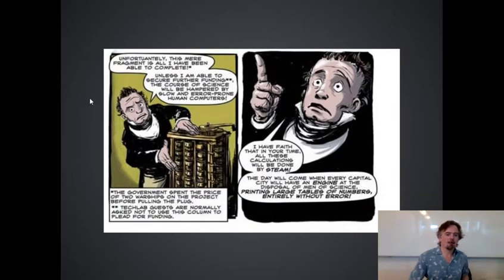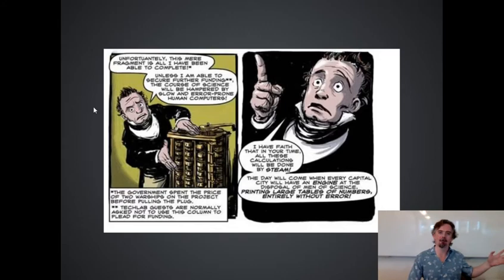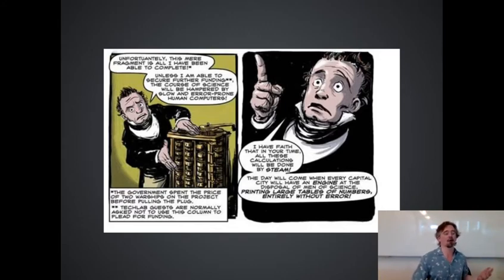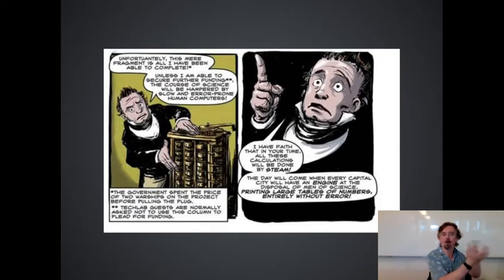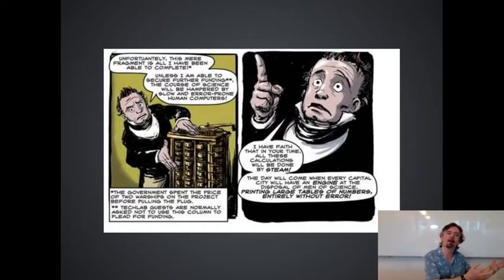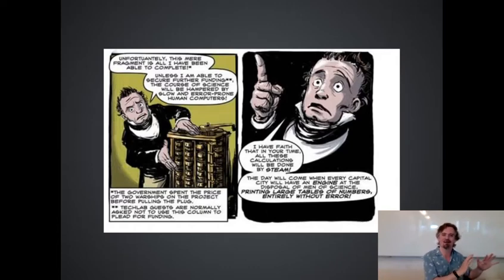Babbage was actually a very famous man in his day — he did all sorts of things, not just computers. He was a very well-regarded mathematician who made all sorts of inventions. He designed the machine but couldn't build it to completion, in part because the machinery had to be done to very high precision standards. It was all clockwork — cogs and gears. Babbage had trouble with the man he hired to build it; they fell out over money and various other things. Babbage tended to fall out with lots of people — he was quite irascible.